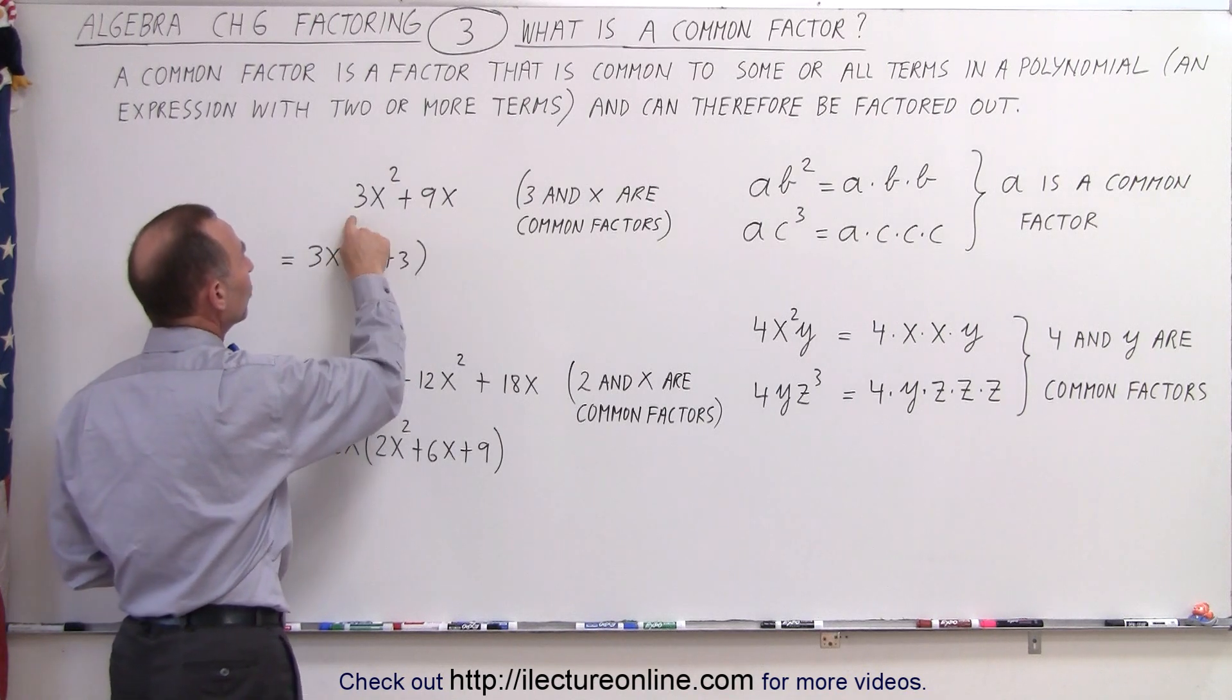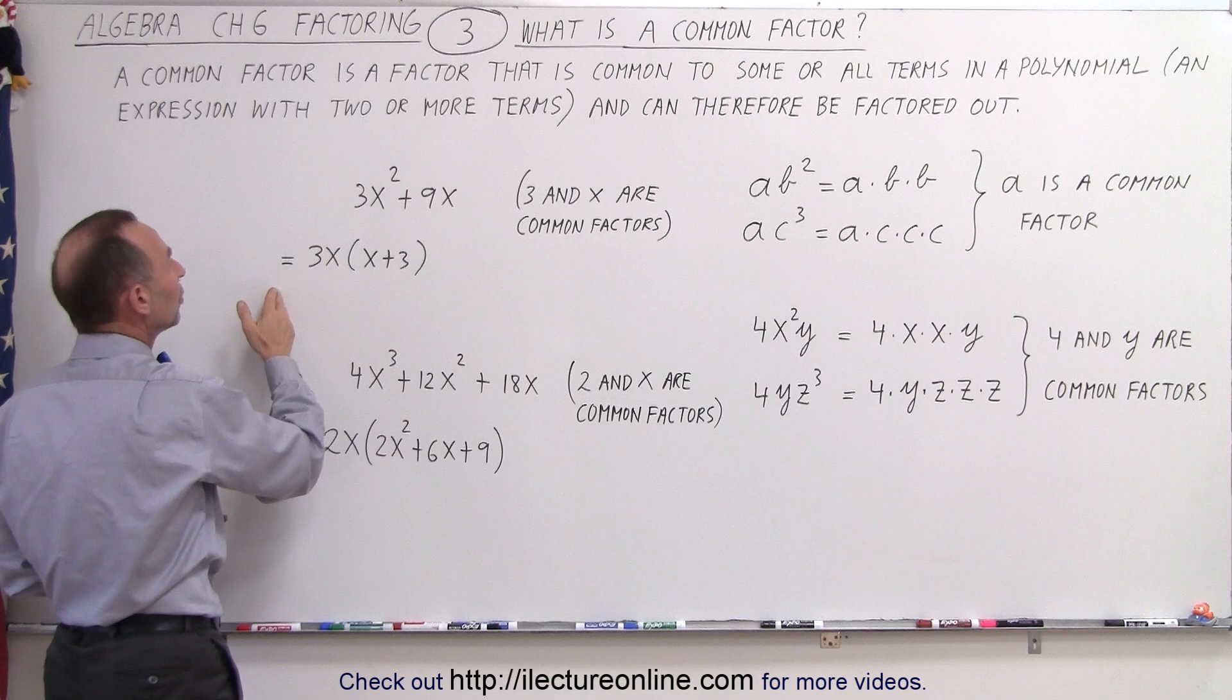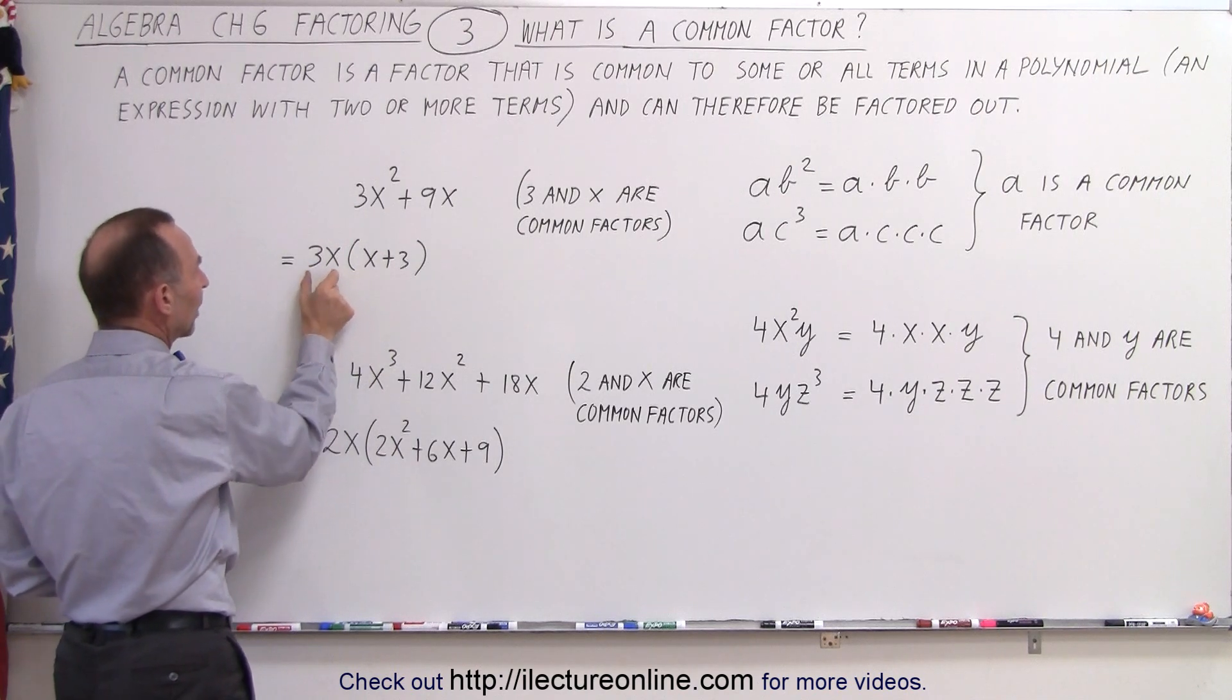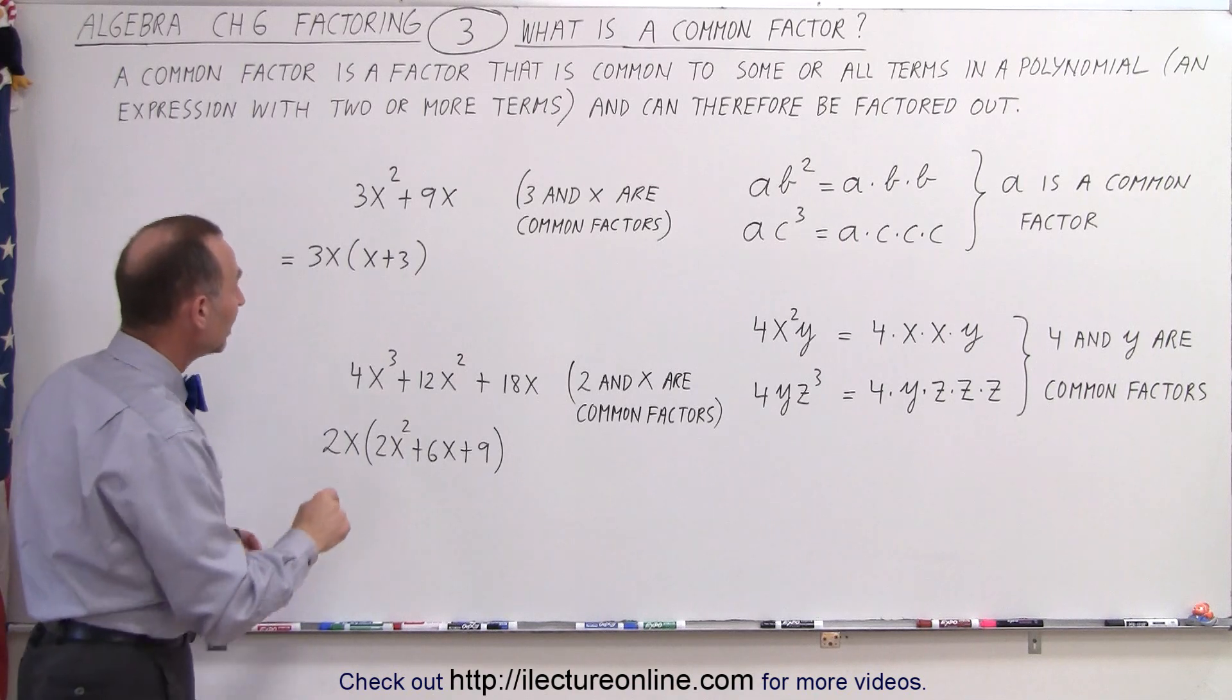We notice that 3 is common to these two terms, and so is x. So we can factor out 3 and x, writing it as 3x times what's remaining. How do we know we did it correctly?